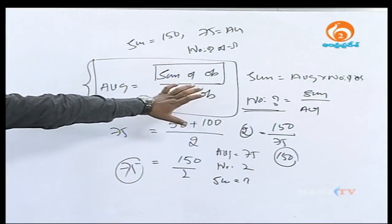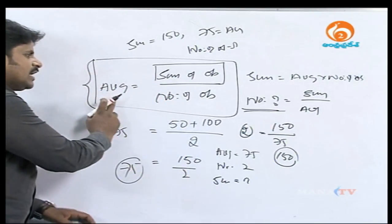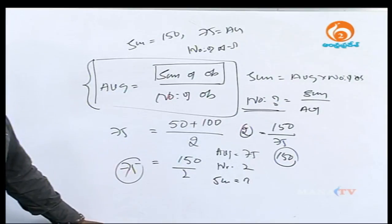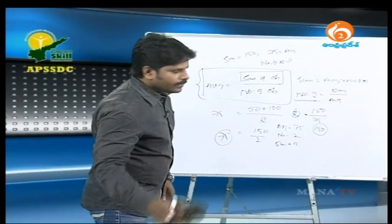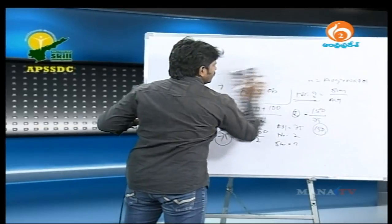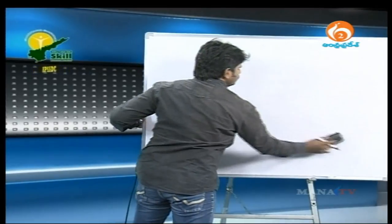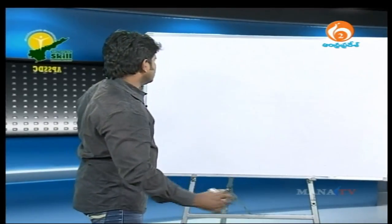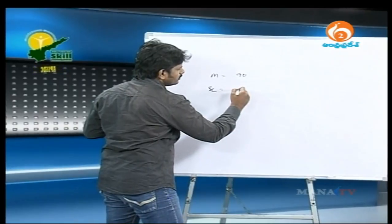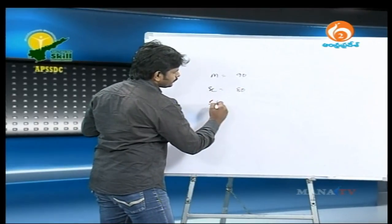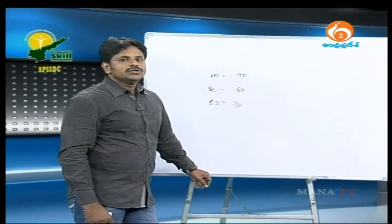By using this relation — average is equal to sum of observations divided by number of observations — you will get the average. So, what is the average? We have three subjects. We will consider maths, science, and social studies.